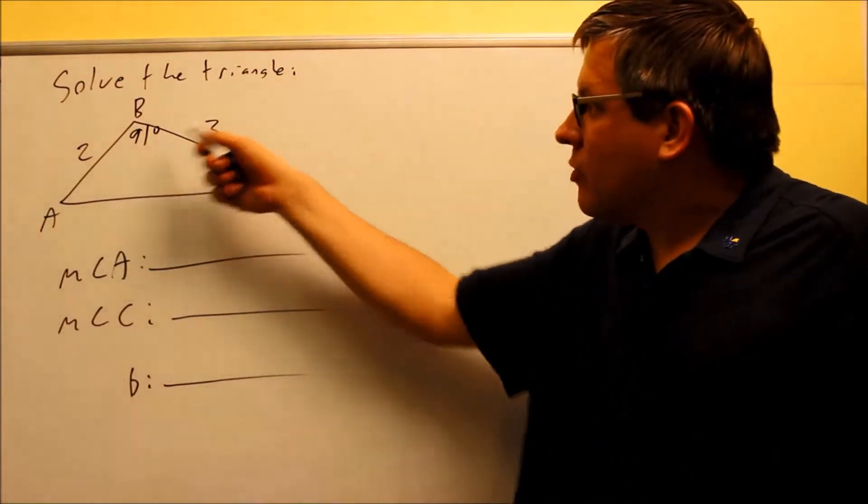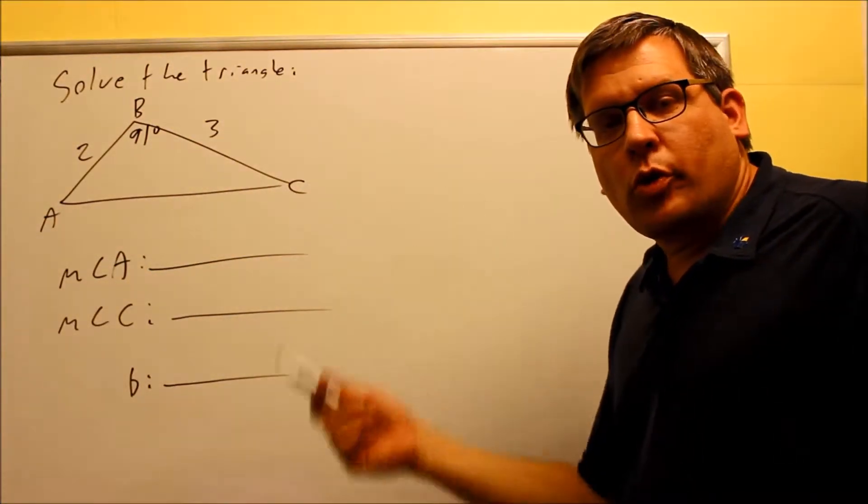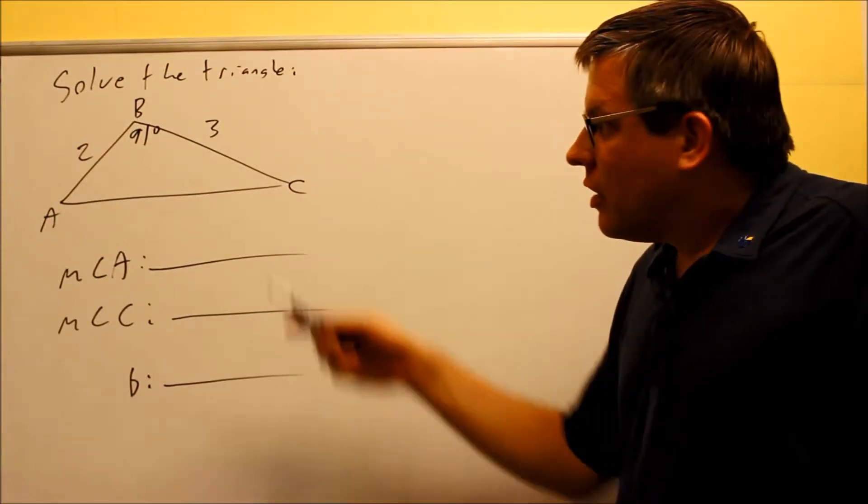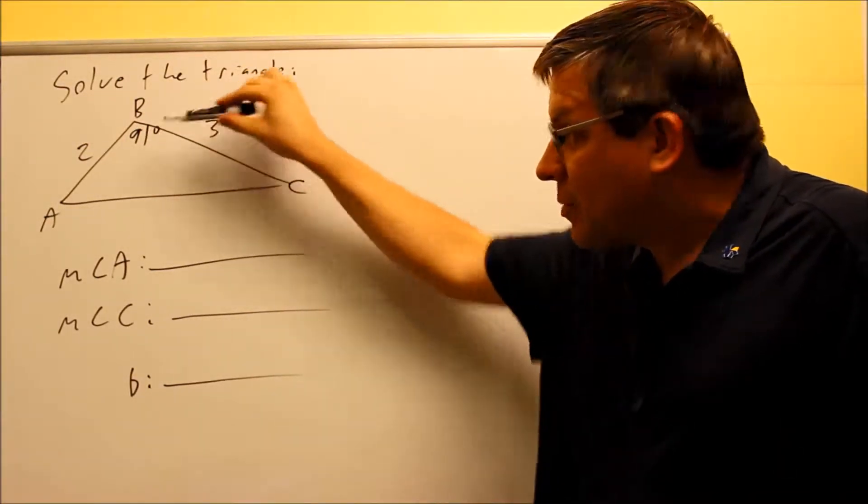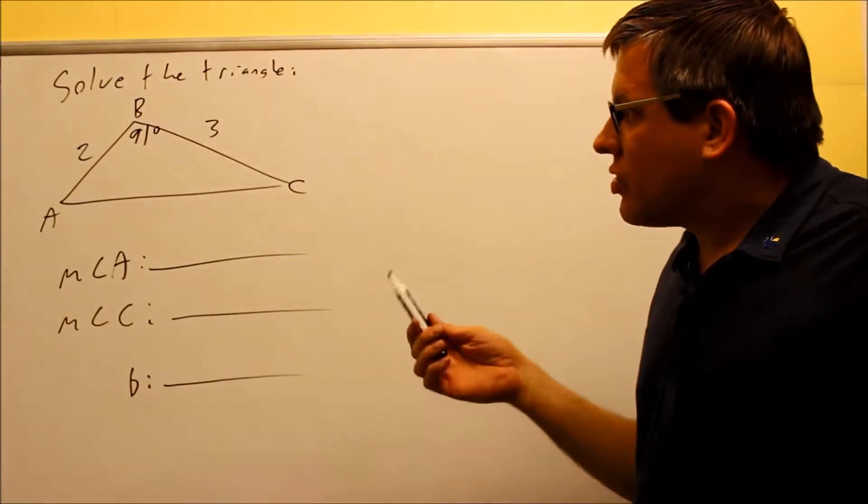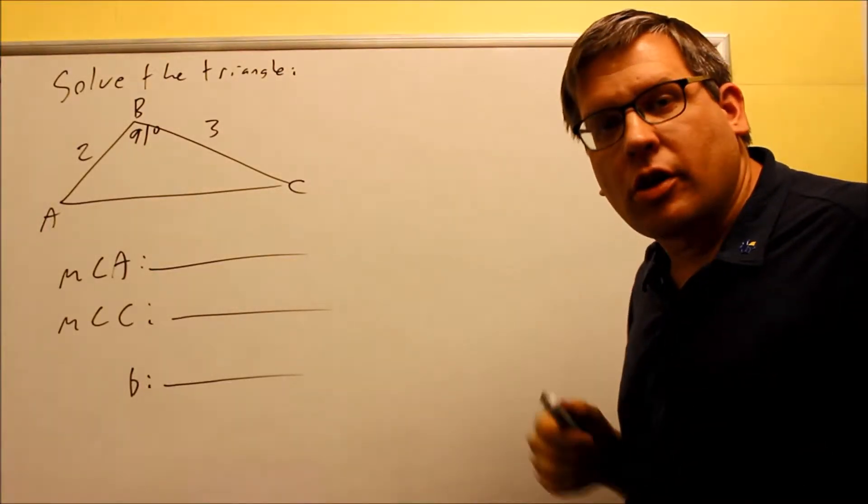Okay, we have another side-angle-side situation. This is one where we want to use the Law of Cosines. Again, you can't use Law of Sines here because we don't have enough information. We don't have a side opposite a given angle. So instead, we're going to use Law of Cosines.